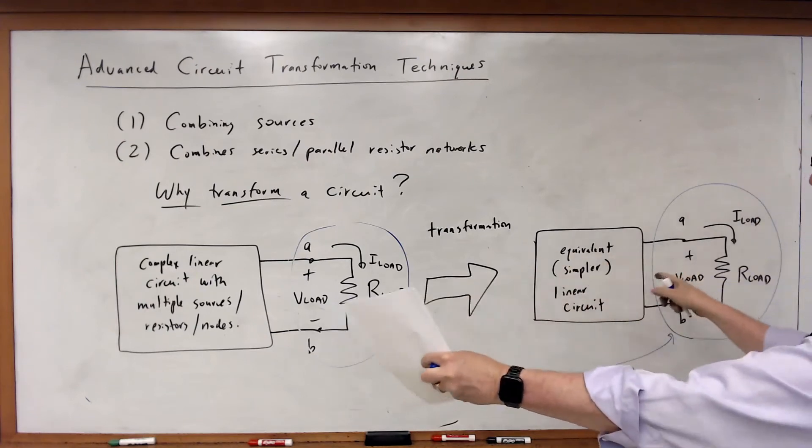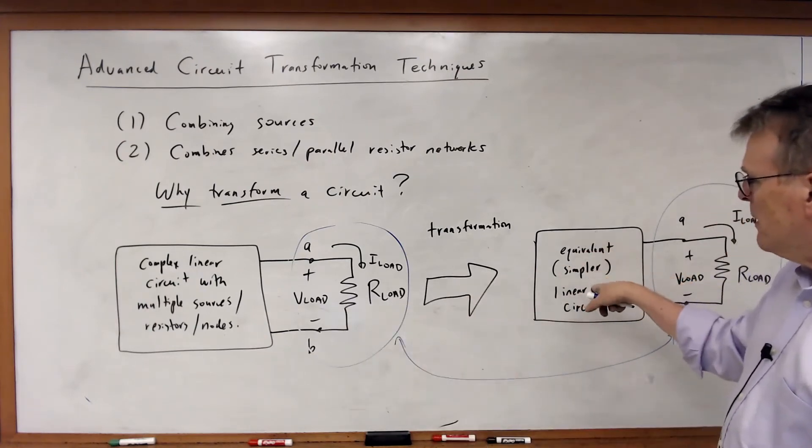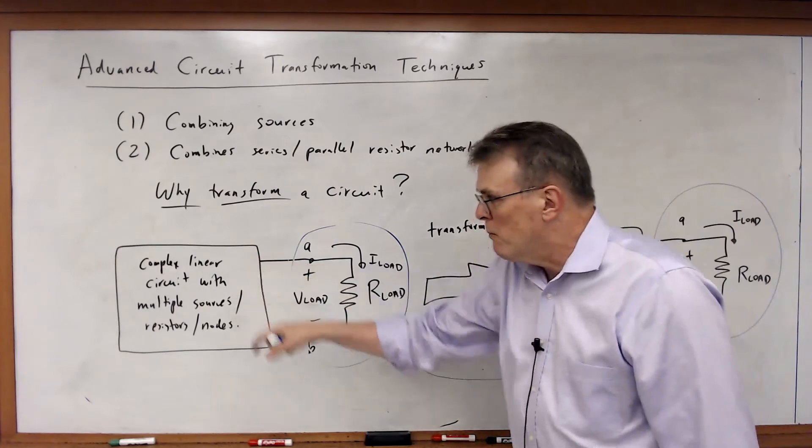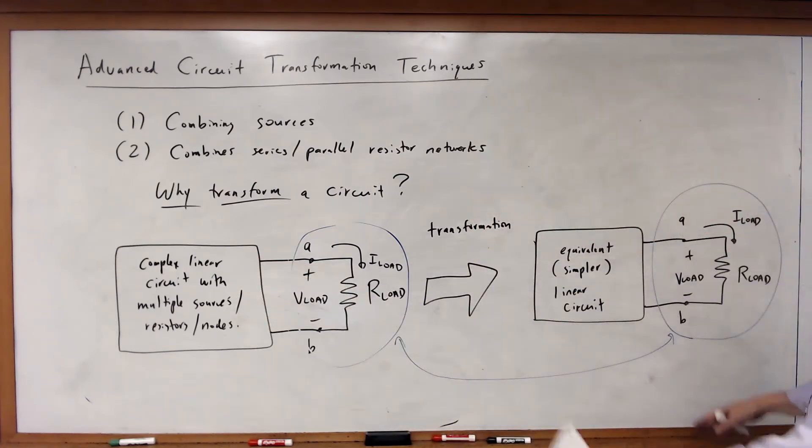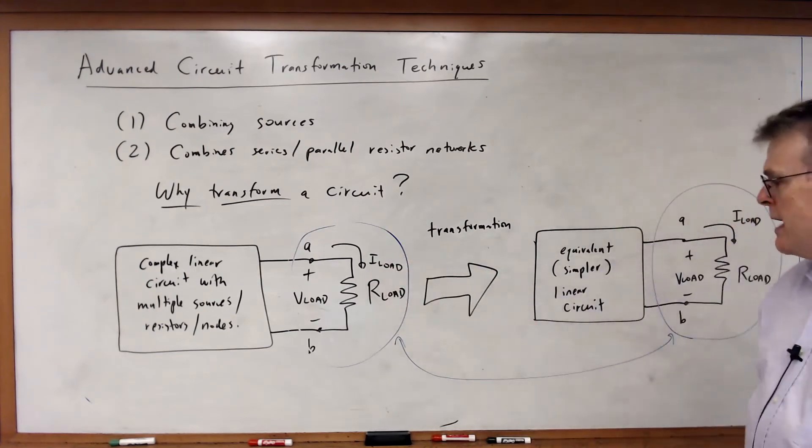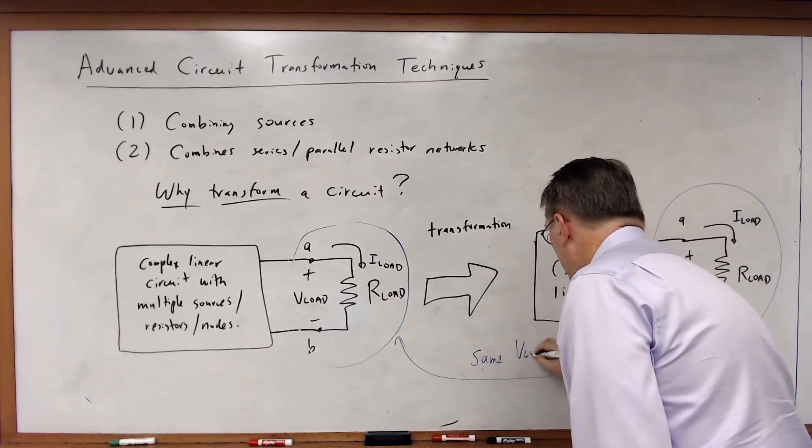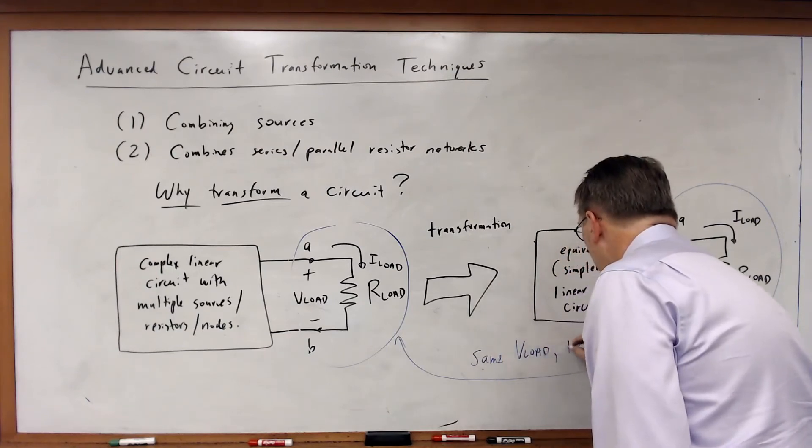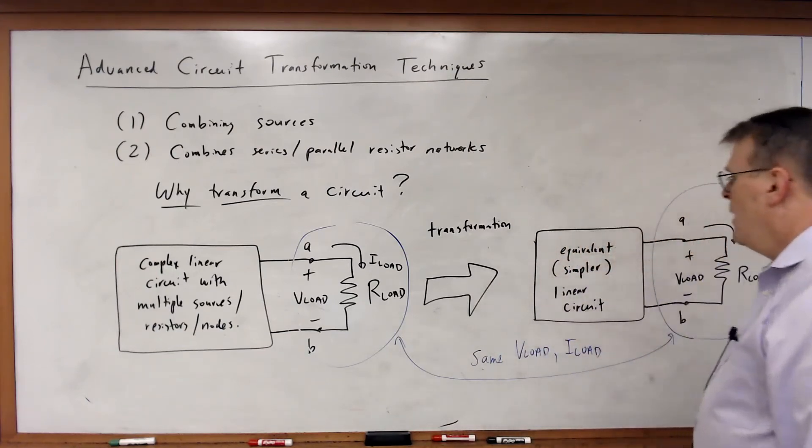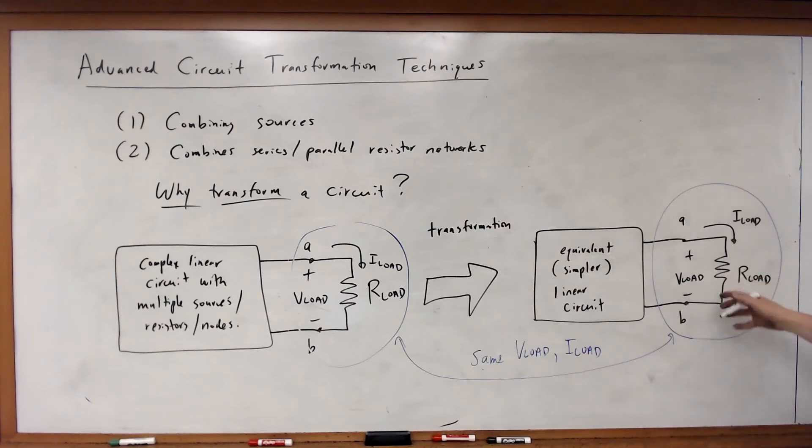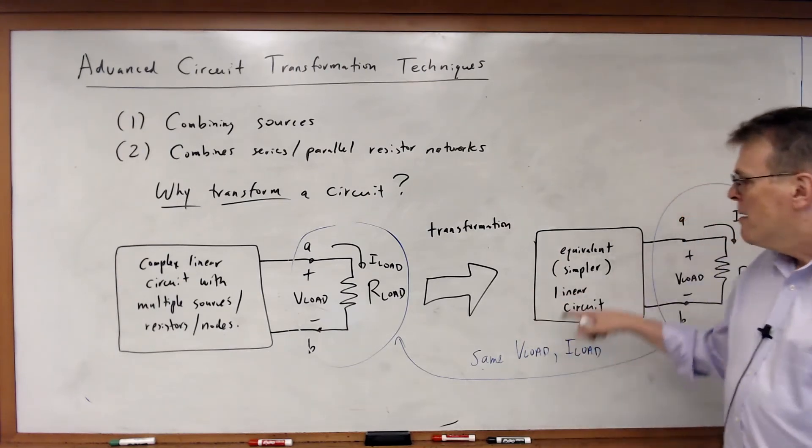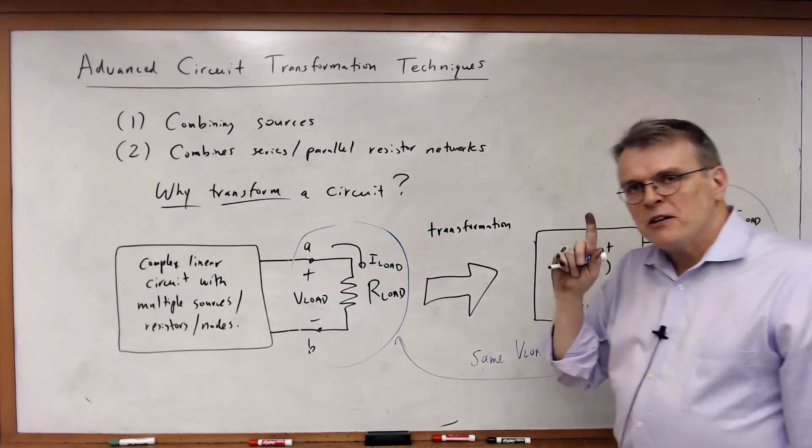For both of these circuits, for both the simple equivalent linear circuit and the original more complex linear circuit, if I connect the load resistor across it, I get the same V-load, the same I-load. So what I've done is I've got a circuit that, as far as the load is concerned, works exactly the same. But it's computationally much easier.